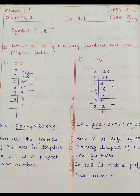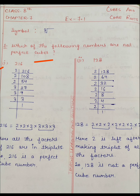Question number 1: Which of the following numbers are not perfect cubes? यहाँ कुछ numbers given हैं और इनमें बताना है कि कौन-कौन से numbers perfect cubes नहीं हैं। पहला number है 216। यह पता करने के लिए कि यह numbers perfect cubes हैं या नहीं, हम सबसे पहले prime factorization करते हैं।